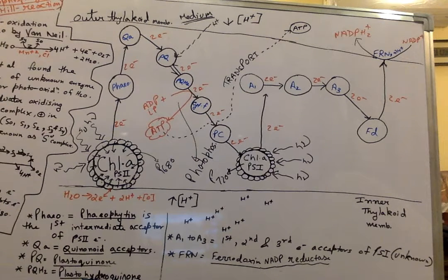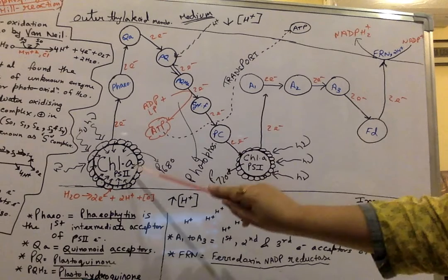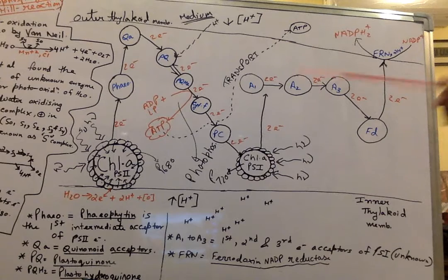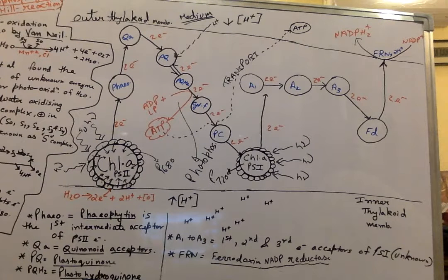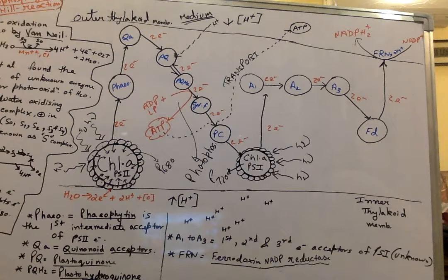The reaction is called non-cyclic photophosphorylation because the electrons here are not sent back to PS2 or PS1. They are used to form NADPH2+. It is non-cyclic because electrons are not transferred back to the reaction centers of PS2 or PS1. Instead, the reaction follows the Z-scheme or non-cyclic process, and electrons are used to form the second assimilatory power, NADPH2+.